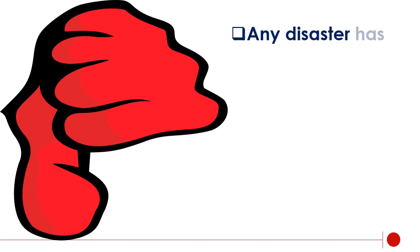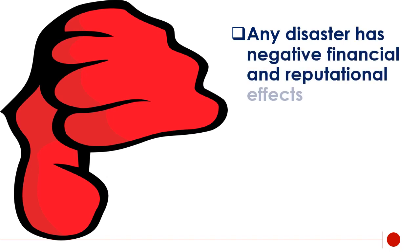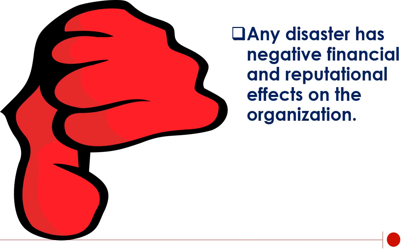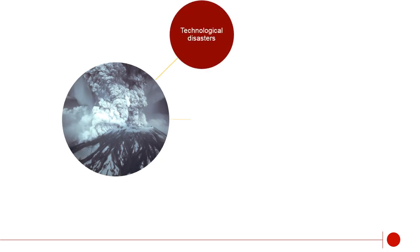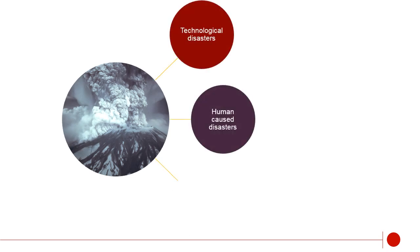Any disaster has negative financial and reputational effects on the organization. The causes of disasters are categorized into three main areas according to origin: technological disasters, human-caused disasters, and natural disasters.